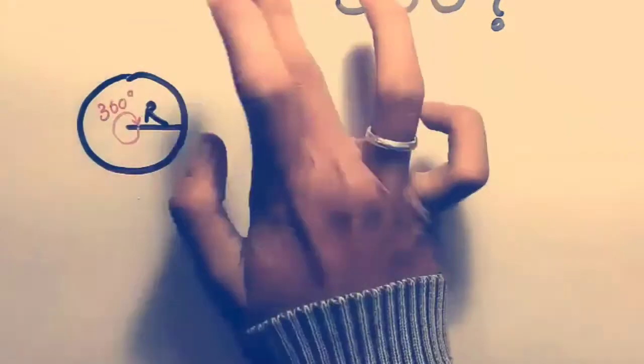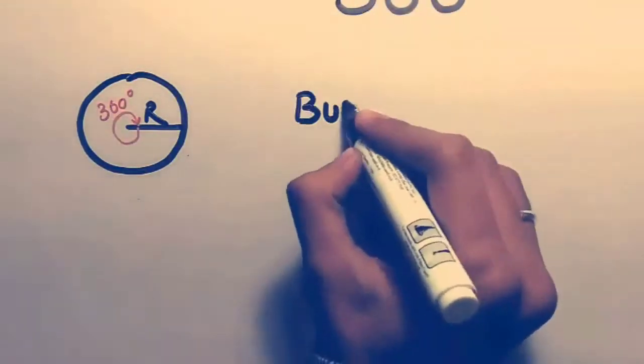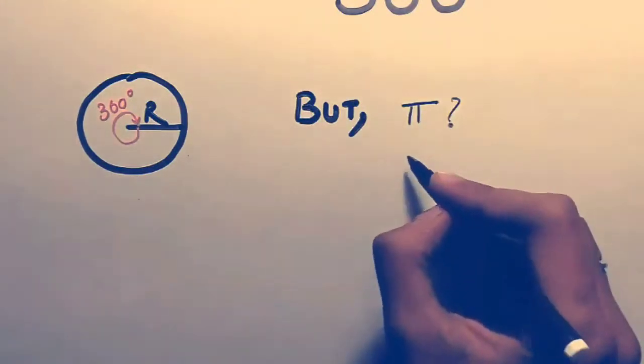So we have reasonable ideas about the origin of the 360 degree convention. What about other systems of measuring angles and what about π?